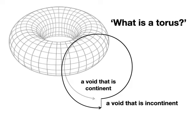Lacan refers to, but doesn't specifically call out the torus as a combination of these two kinds of voids, one that is continent, another that is incontinent. But a visual approach sees this in his drawings and hears it in his references.